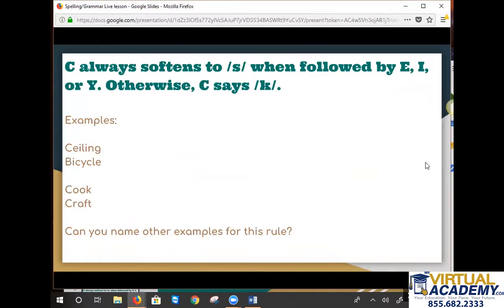All right, another spelling pattern that we sometimes see is when C softens to an S sound when it's followed by the letters E, I, or Y. Otherwise C is pronounced with a hard K sound in words that aren't followed by those letters. So we have some examples. The letter C sounds like an S sound when you pronounce ceiling or in the middle of the word bicycle. That C makes that soft S sound. And then the second two are examples of a hard K sound: cook, craft.